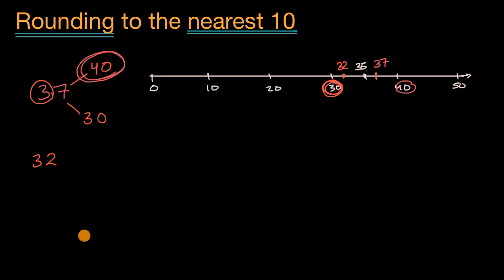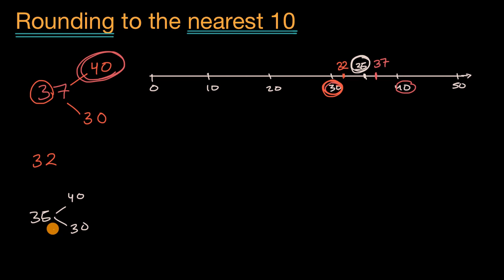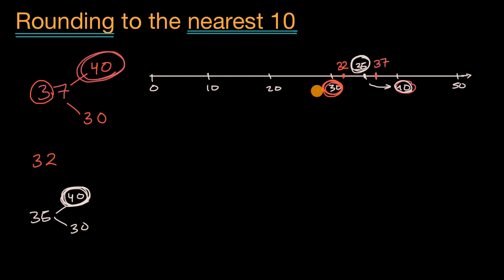An interesting question: what if you're right in between? What if we wanted to round 35 to the nearest 10? 35 is between 30 and 40 — which one do we round to? The rule — and this is something society has decided — is that if you're right in the middle, you round up. So 35 rounds up to 40. Even though it's exactly five away from each number, 35 rounds up to 40. If you're a little bit less than 35, then you round down to 30.